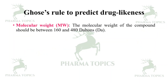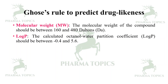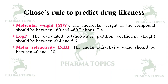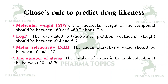The Ghose Rule specifies: molecular weight should be between 160 and 480 Daltons; logP should be between −0.4 and 5.6; molar refractivity should be between 40 and 130; and the total number of atoms in the molecule should be between 20 and 70.